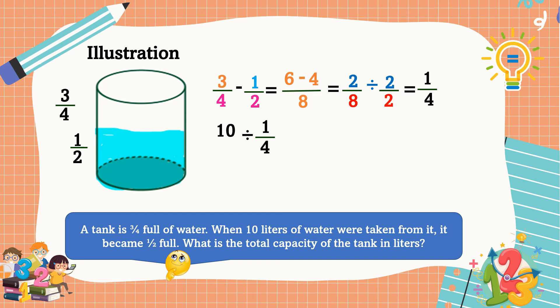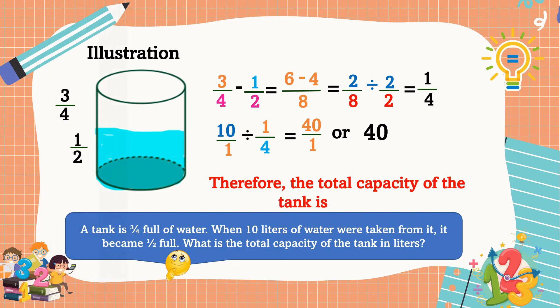We are going to divide 10 by 1 fourth. We can put a denominator of 1 to 10. Then let's use cross multiplication. 10 times 4 is equal to 40. 1 times 1 is equal to 1. 40 over 1 or this is equal to 40. Therefore, the total capacity of the tank is 40 liters.